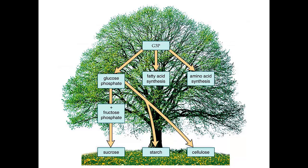Plants can make a diversity of organic molecules starting with G3P. Taking two molecules of G3P and putting them together creates the six-carbon glucose molecule. Glucose can be conjugated to fructose to create the disaccharide sucrose, or table sugar. G3P can also be used to generate fatty acids as well as amino acids — all 20 amino acids can be created from G3P, plus other nutrients. Plants generate all of the molecules they need simply by starting with water, carbon dioxide, and energy. Glucose can also be used in chains to make both starch and cellulose.